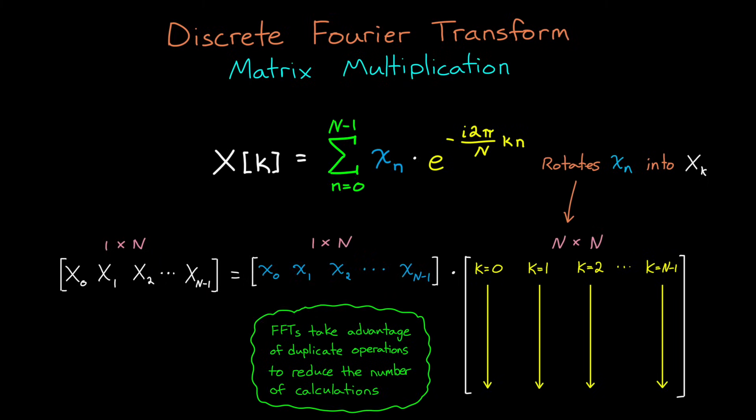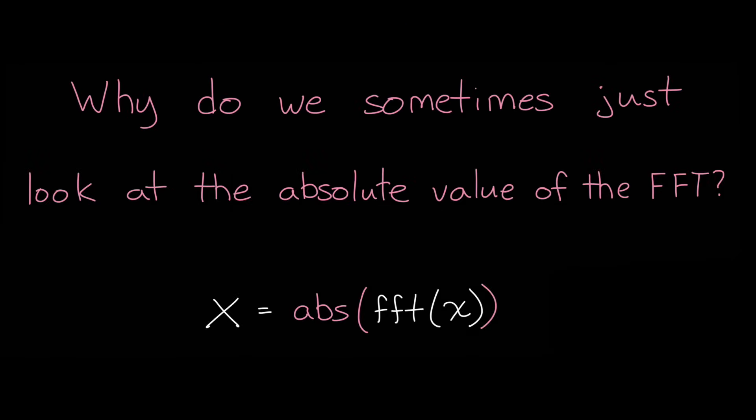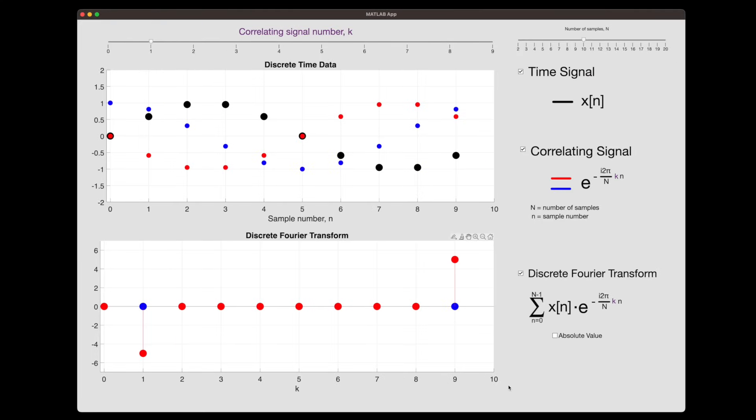Now that we know that the FFT is just an efficient way to calculate the DFT, I want to use the last bit of this video to answer a few practical questions and dive a little deeper into how we use and interpret the results. And the first question is, why do we sometimes just look at the absolute value of the FFT? Well, recall that the FFT produces a complex result. And the way that we can interpret this is that the real part of the FFT is how well the time signal correlates to a cosine wave of a given frequency. And the imaginary part is how well it correlates to a sine wave of the same frequency. And knowing both of these is necessary if you want to know the phase of the frequency in your original signal, or if you want to be able to reconstruct that signal exactly from frequency data.